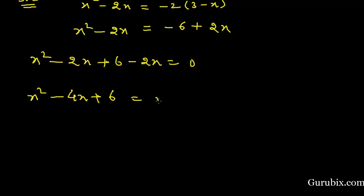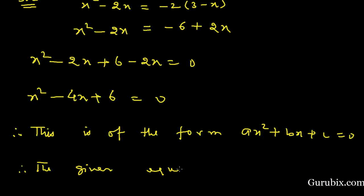plus 6 equals 0. This is of the form ax square plus bx plus c equals 0. Therefore, the given equation is a quadratic equation. So this is the solution of the question. Thank you.